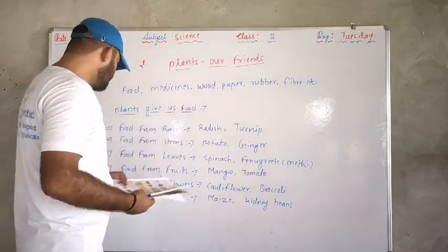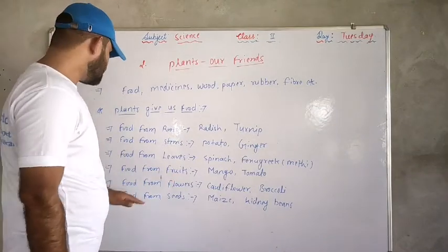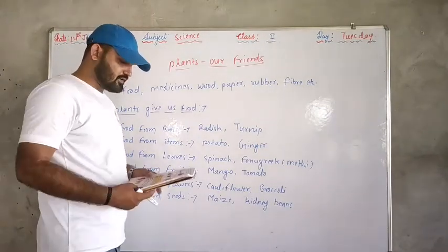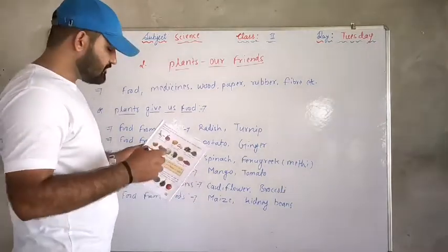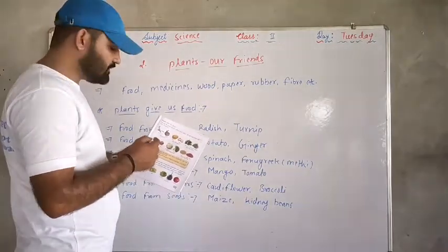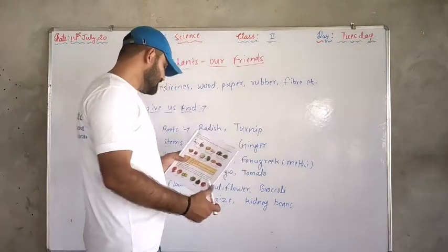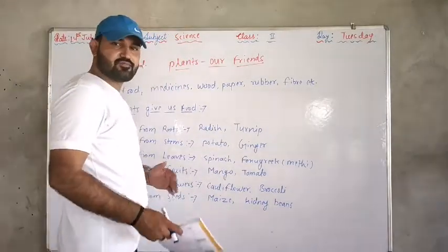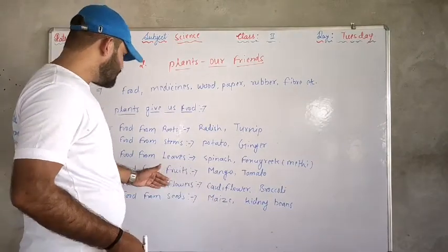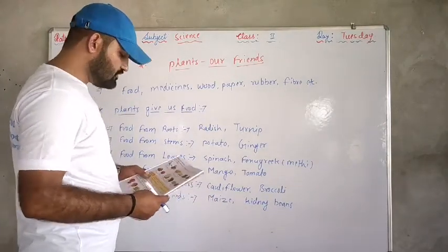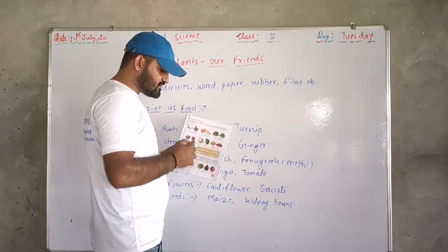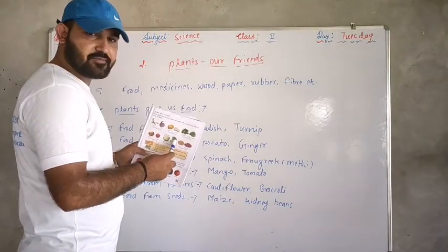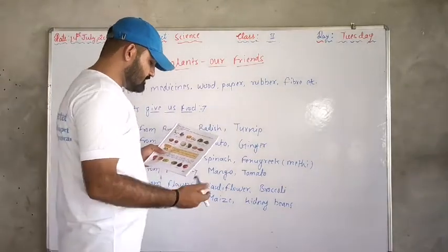Next is food from flowers. Food from flowers — this is a category. For example, broccoli. This is an example of food from flowers.